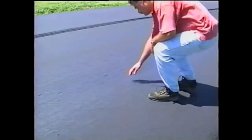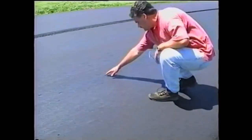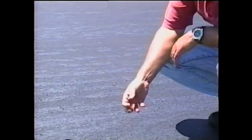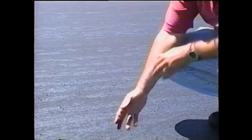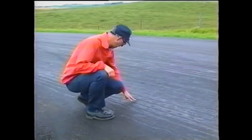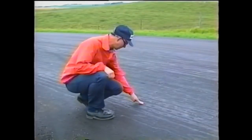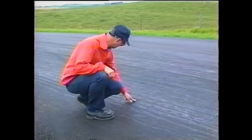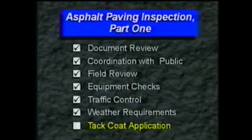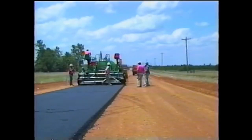When asphalt cement is used, the mix can be placed immediately. However, when a cutback asphalt is used, it must first cure — that is, the solvents must evaporate. You can check the application with your finger. Before a cutback cures, your finger will pick up an oily film. After it cures, there's no oily film and the surface is tacky or sticky. With that, we've covered your preliminary inspection responsibilities and the tack coat application. In part two, we'll look at the paving operation itself.